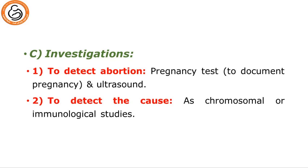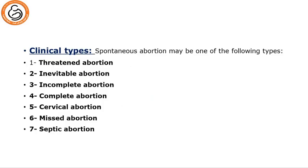For investigations to detect abortion, we should do a pregnancy test to document pregnancy and ultrasound. Note that if the abortion or fetus has been dead more than two weeks, the pregnancy test may sometimes be negative. To detect the cause, chromosomal and immunological studies are sometimes done at the time of abortion, especially chromosomal karyotyping of the products of conception, trying to diagnose the cause of abortion.